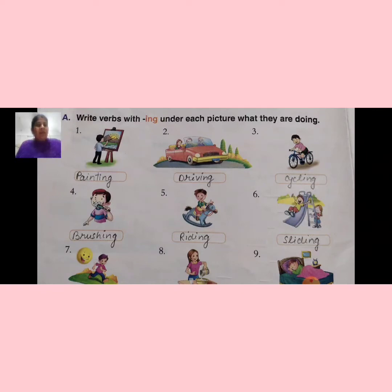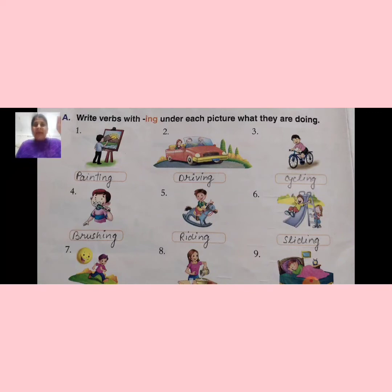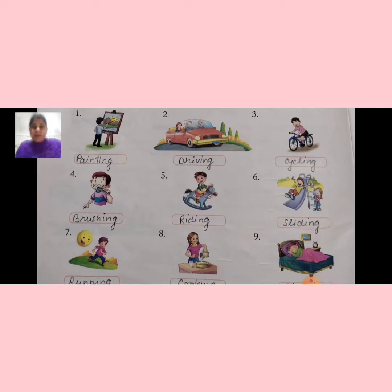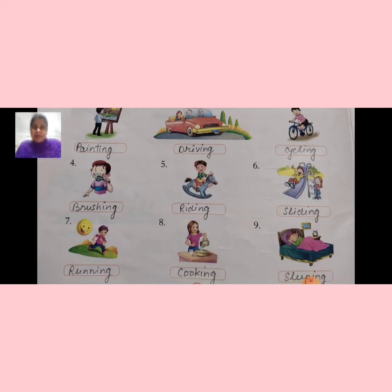Next, a boy who is cycling — cycling kara hai, toh C-Y-C-L-I-N-G, cycling. Jitne bhi action words hain, un mein bas aapko ING lagana hai. Brush, toh brushing — B-R-U-S-H-I-N-G, brushing.